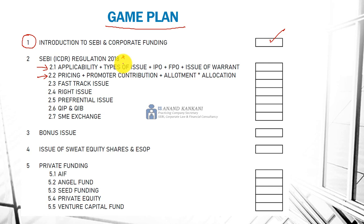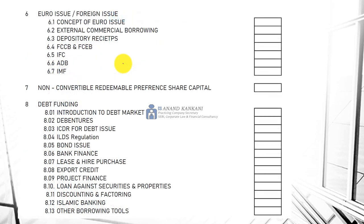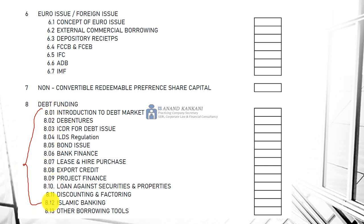I have not provided a video for the December 2019 attempt. This is the fresh video I am making for the June 2020 attempt. So we are going to cover ICDR, bonus issues, sweat equity, private funding, euro issue or foreign issue, non-convertible redeemable preference shares, then debt funding — and you can check that there are so many concepts which we are going to cover.